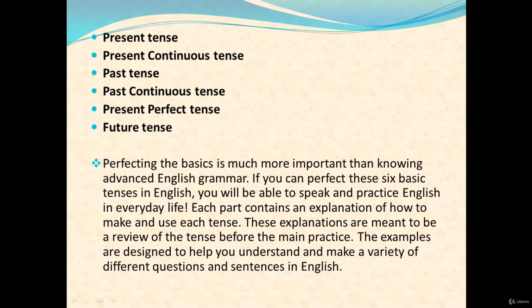Number one: present tense. Number two: present continuous tense. Number three: past tense. Number four: past continuous tense. Number five: present perfect tense. And number six: future tense.